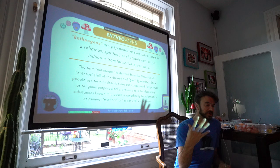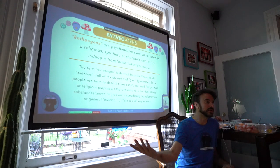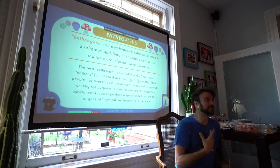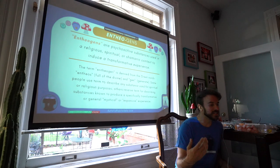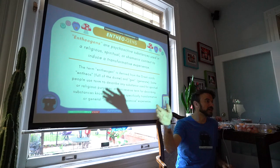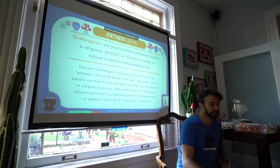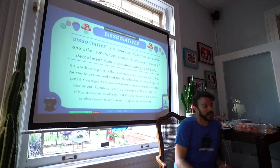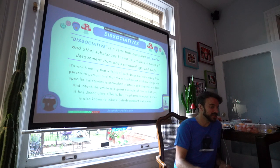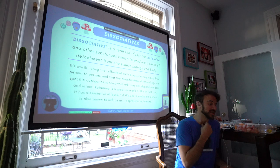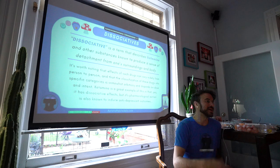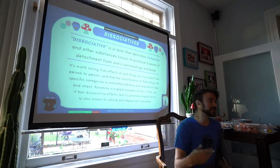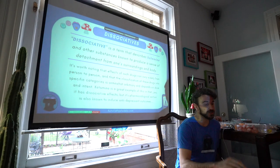Entheogens are more related to religious, spiritual, and shamanic contexts. This course is admittedly not leaning towards entheogenic practice, mainly because our definitions are coming from a heavily Western medicalized model. The class doesn't really touch on too much of spiritual practice — just to honor it, recognize it, and find wisdom within it. Dissociative is just another class of drug. Ketamine is under this category and also has antidepressant effects. Effects of such drugs can vary widely from person to person, and classification is somewhat arbitrary depending on dose and intent.